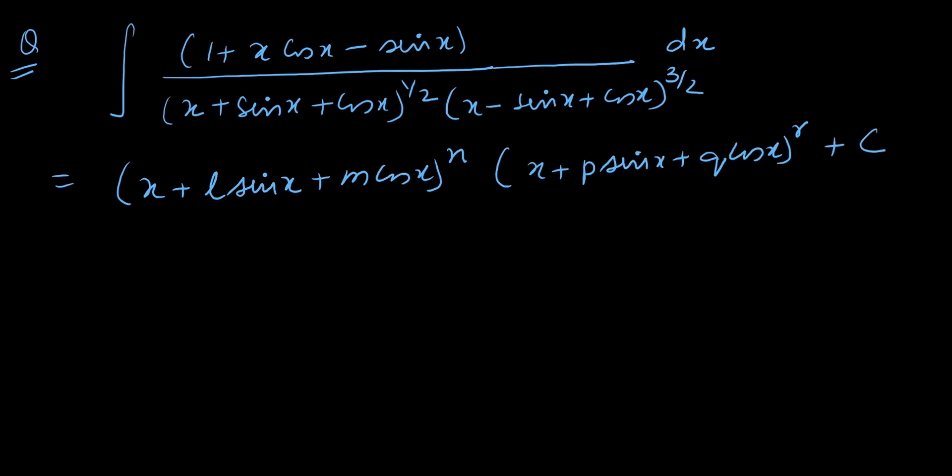Now what you have to do is find out the value of (l plus m) by n multiplied by (p minus q) into r. So many p, q, r, l, m, n we have here. It is given that l and n are greater than 0.